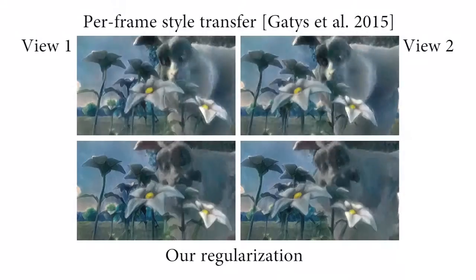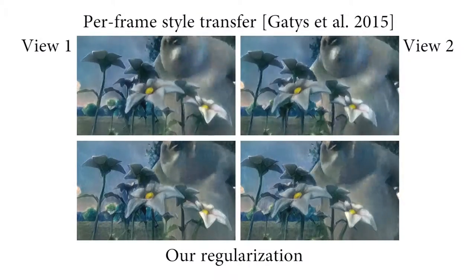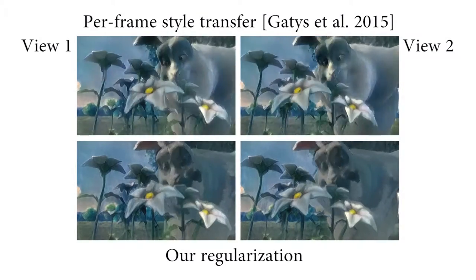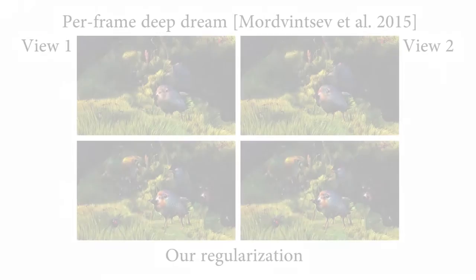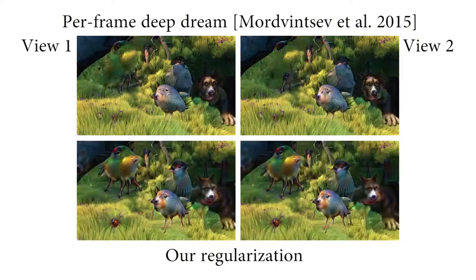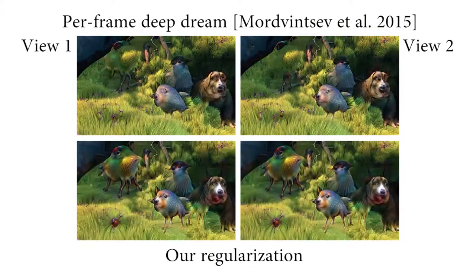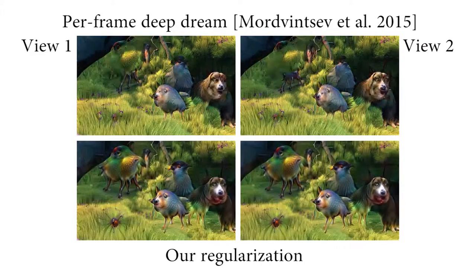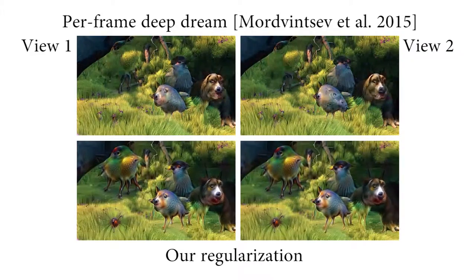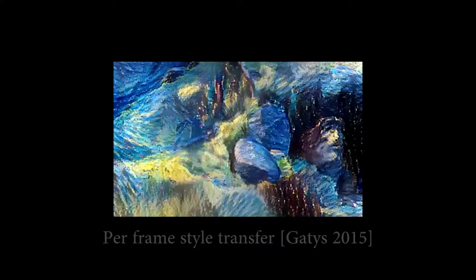One way to overcome the NPR limitation is to iterate the filter response with our regularization. This works especially well in neural network-based style transfer applications, where we ultimately arrive at a spatially and temporally consistent result representative of the desired style.